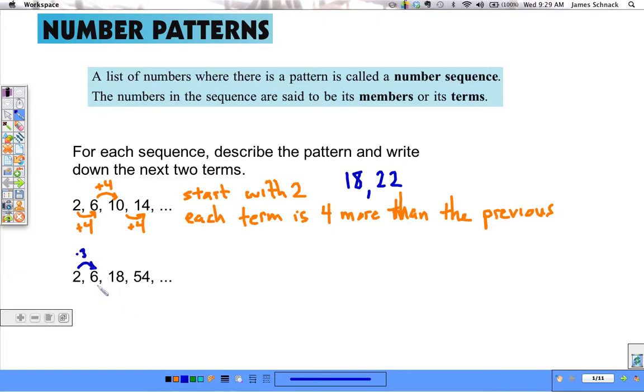Multiplying by three would do it. So does that hold true with these other ones? Well, six times three is eighteen, and eighteen times three is fifty-four.